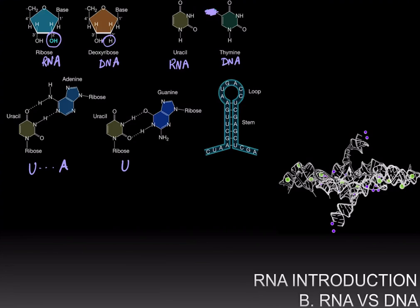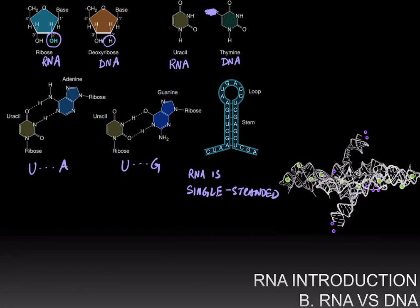Uracil base pairs with adenine just like thymine base pairs with adenine in DNA. However, uracil can also form two hydrogen bonds with adenine, and this explains certain properties of the genetic code that we will discuss later on. Another difference is that RNA is obligately single-stranded, whereas DNA, although it can be single-stranded, is mostly found in a double-stranded form. Having a single-stranded nucleic acid means that base pairing can occur within different nucleotides of the same molecule, and therefore RNA is capable of forming secondary structures.